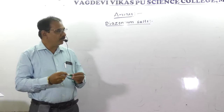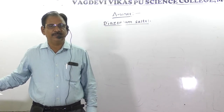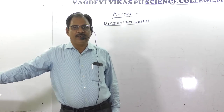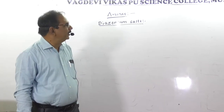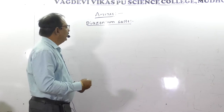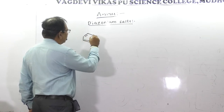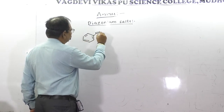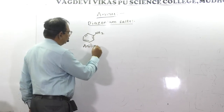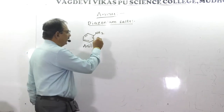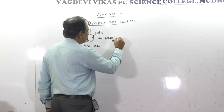The preparation of Diazonium salts was already discussed in session number 4, that is primary aliphatic amines. Primary aliphatic amines are converted into Diazonium salts. For example, an amine which is treated with nitrous acid, that is HNO₂ plus HCl.